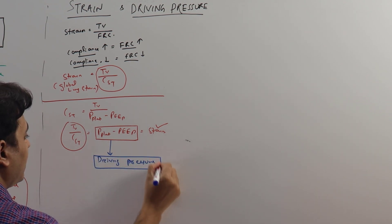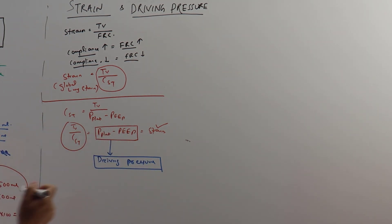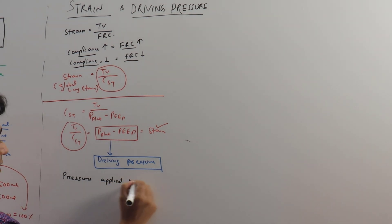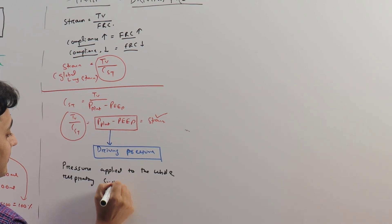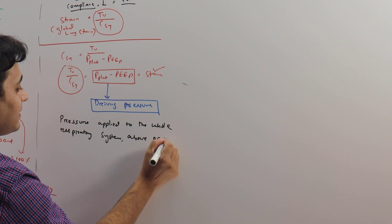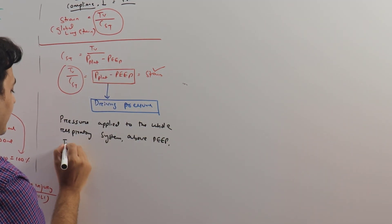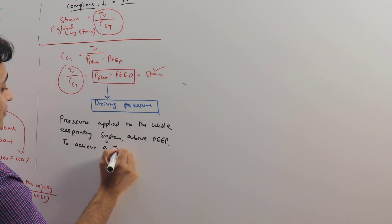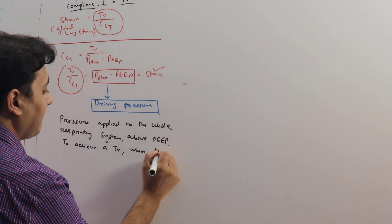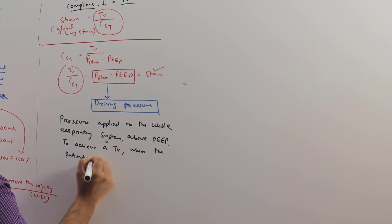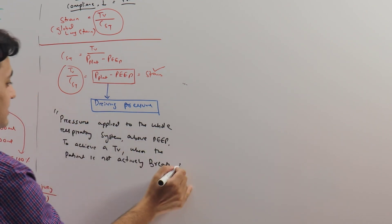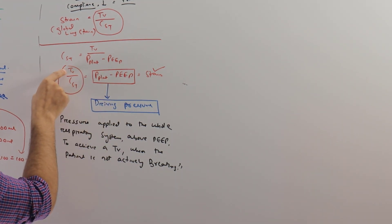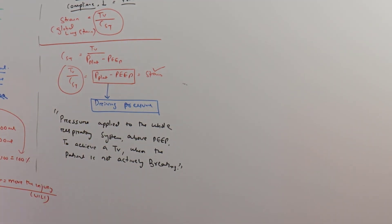The definition of driving pressure from this equation: driving pressure is the pressure applied to the whole respiratory system above PEEP to achieve a tidal volume when the patient is not actively breathing. That is the actual definition of driving pressure — the pressure applied above PEEP to achieve a tidal volume when the patient is not actively breathing.